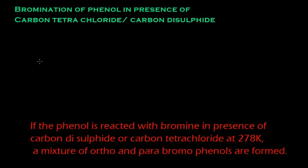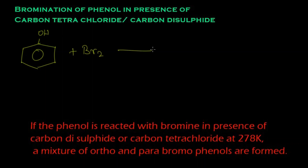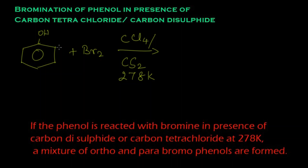If phenol is reacted with bromine in the presence of carbon disulfide (CS₂) or carbon tetrachloride (CCl₄) at 278 Kelvin, a mixture of ortho and para bromophenols are formed. Let's learn this reaction: bromine is added to phenol in the presence of CCl₄ or CS₂ at 278 Kelvin.